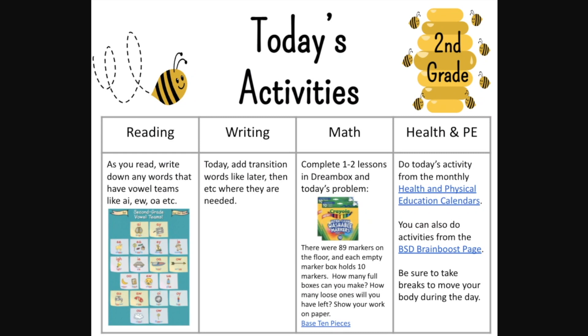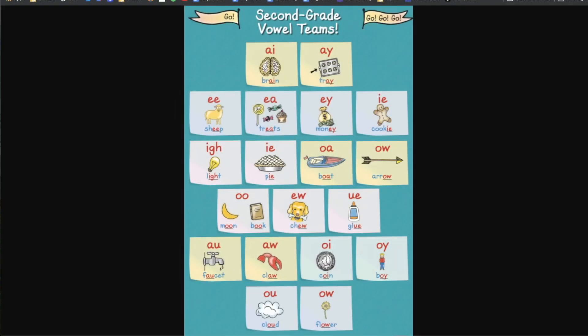Vowel teams together like A-I, E-W, O-A. There's a little chart there — I'm going to go ahead and enlarge it a little bit here for you so it's a little bit easier to see. As you're reading, you're going to be looking for these vowel teams. If you see these in any words, go ahead and stop and write them down. We'll keep track of how many times you're seeing them and if they have the same sounds.